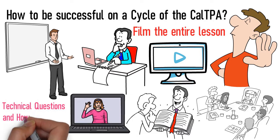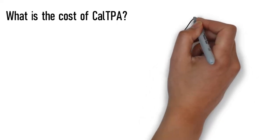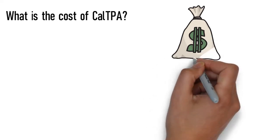Technical Questions and How to Submit. What is the Cost of CalTPA? CalTPA costs $150 per cycle attempt as of today. It may change by the time.